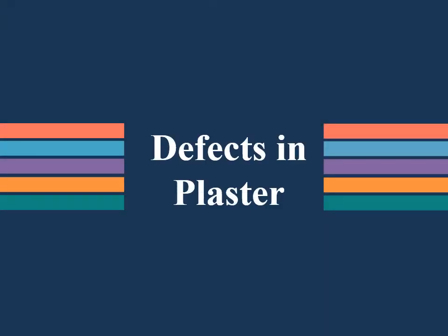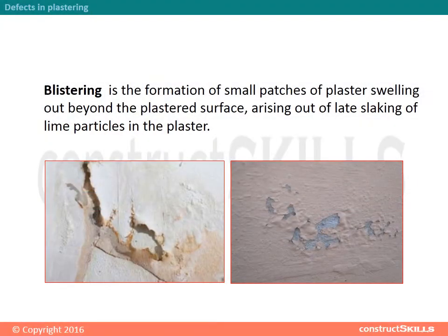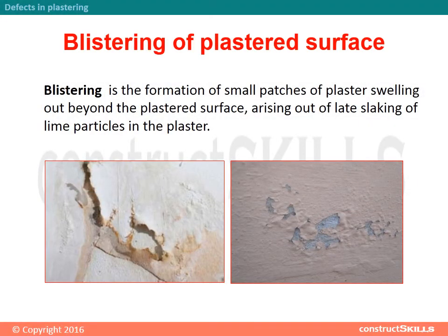Defects in plastering. Blistering of plastered surface: Blistering is the formation of small patches of plaster swelling out beyond the plastered surface, arising out of late slaking of lime particles in the plaster.